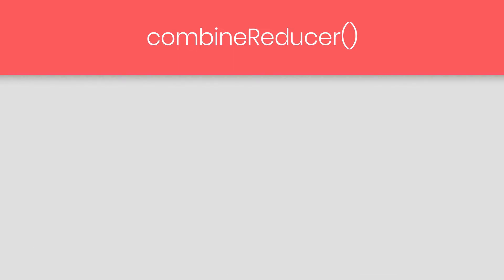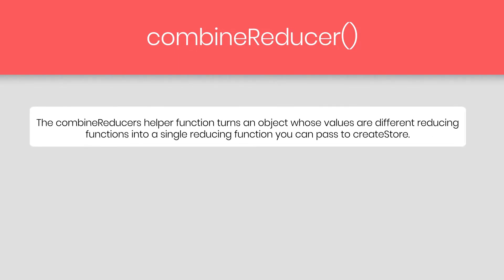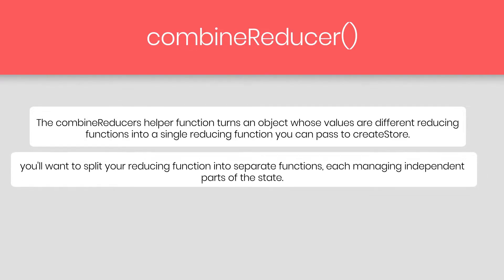The Combined Reducer helper function turns an object whose values are different reducing functions into a single reducing function you can pass to createStore. As your app grows more complex, you'll want to split your reducing functions into separate functions, each managing independent parts of your state.